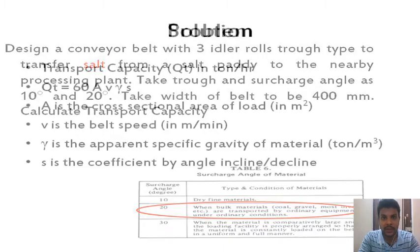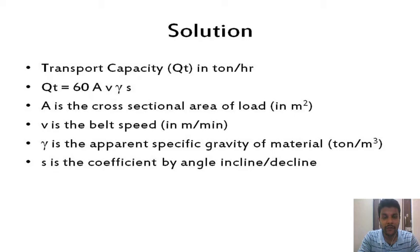There is a formula to find the transport capacity in tons per hour. Qt is given. A is the cross-sectional area, v is the belt speed, gamma is the apparent specific gravity of material, and s is the coefficient by angle of incline or decline.